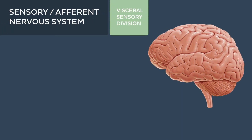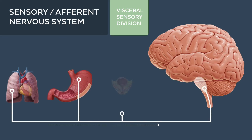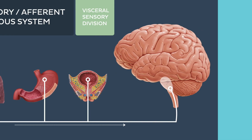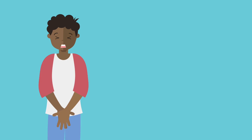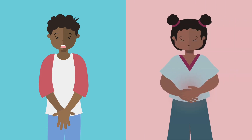The visceral sensory division comprises neurons transmitting signals from internal organs like your lungs, stomach, urinary bladder, and any other internal organ you can think of. We're talking about sensations like "my platter is really full" or "I ate far too much for dinner."